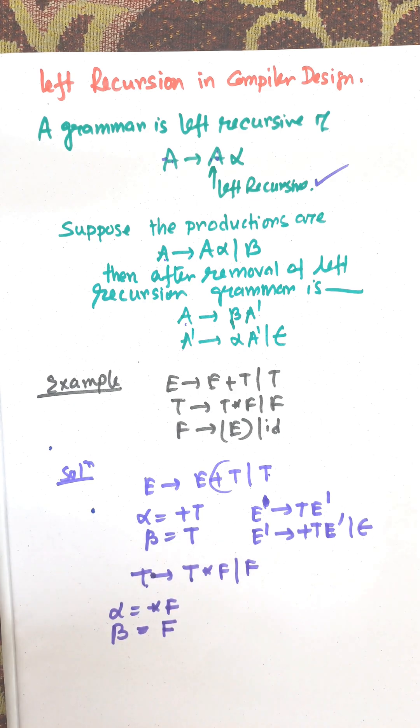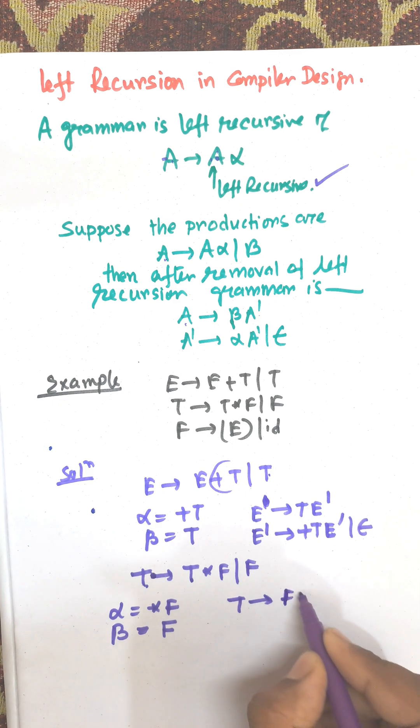We need to find out alpha and beta, then apply the rule of removal of left recursion. Now, T equals βE'. Beta is F, so T → FT'.